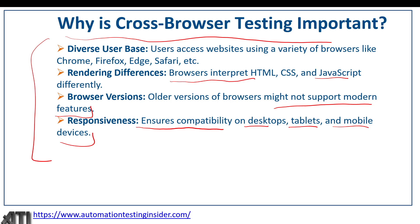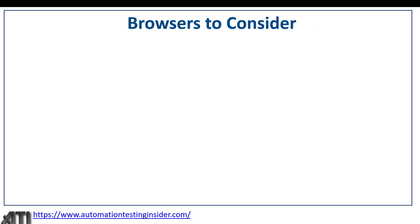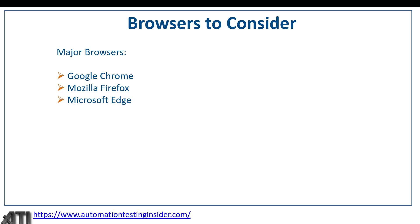What are the different browsers to consider? Google Chrome is the major browser used on both mobile and desktop. Mozilla Firefox, Microsoft Edge, and Apple Safari are the other key ones. Since we are using a Windows system, we will cover Google Chrome, Mozilla Firefox, and Microsoft Edge in today's session — demonstrating how we can run our scripts on different browsers. Apple Safari would be covered on iOS. These are the major browsers normally considered when performing testing in an organization.